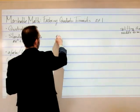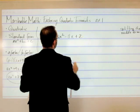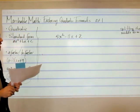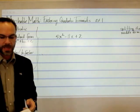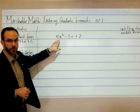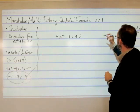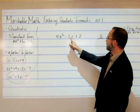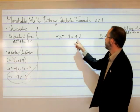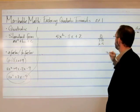Let's try the next one: 5x squared minus 11x plus 2. Press pause for a moment and try your hand at factoring that using the AC method. Is it in standard form? Yes, it's already in descending degree of x. So I'm going to take a times c, which is 5 times 2 — that's 10. I'm not interested in signs at this point. Factors of 10: 1 and 10, and 2 and 5.